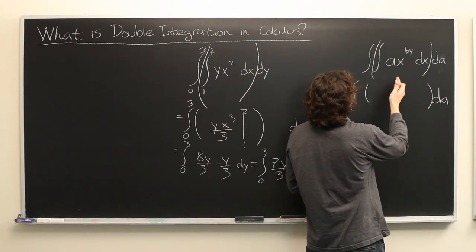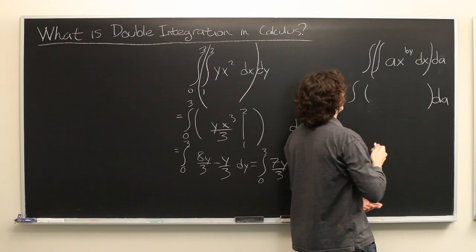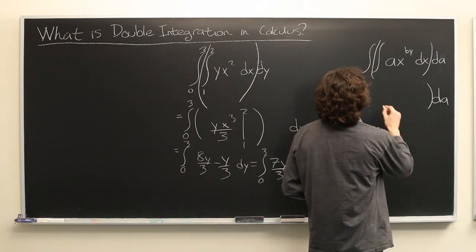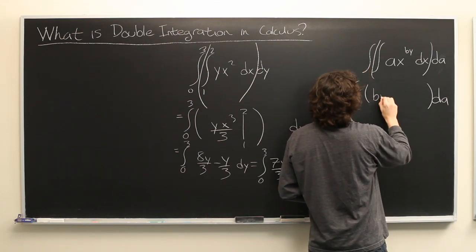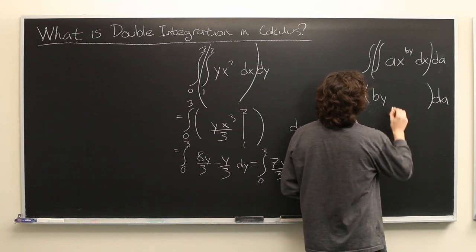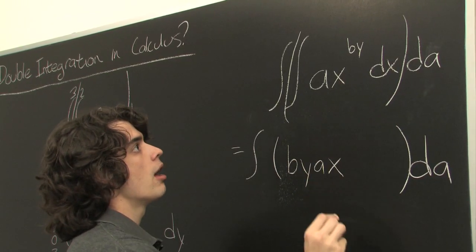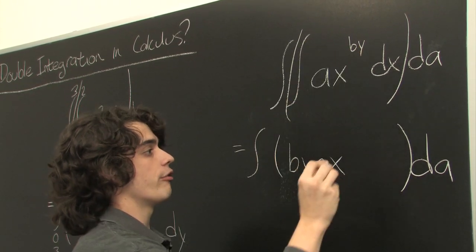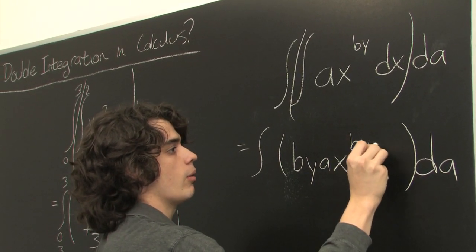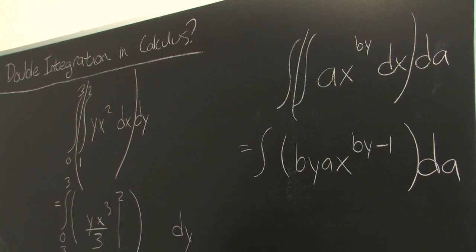All right. So we can simply use the power rule here. Might look a little cumbersome, but that's essentially all there is to it. Bring down the exponent, which is by, keep the constant, and then we're going to subtract one from that exponent, by minus one. Awesome.